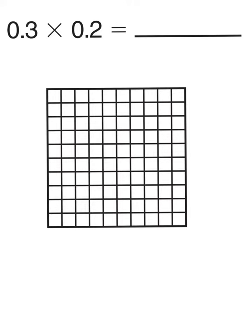Let's take a look at our problem. It says 3 tenths times 2 tenths. We have our decimal model in front of us, so we are going to count over 3 tenths — that would be 1, 2, 3 tenths. We will go ahead and shade those tenths blue.